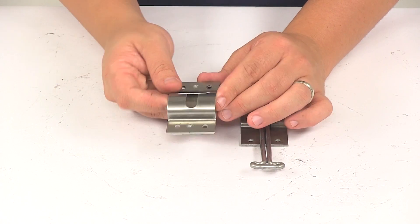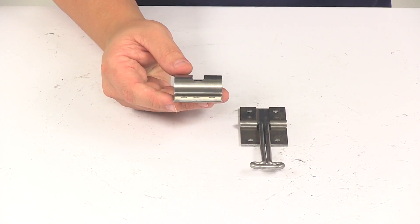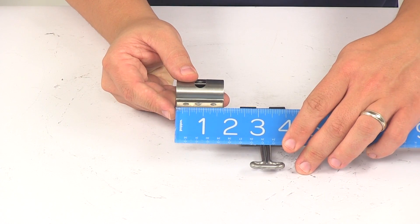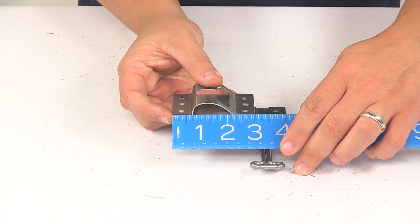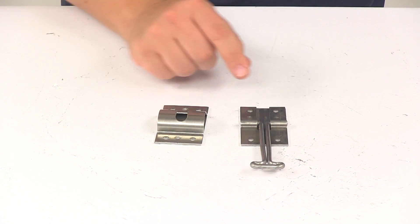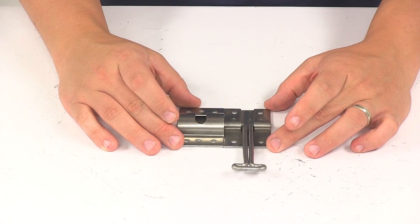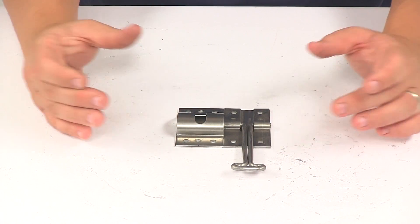This piece right here is going to give us a measurement of one and three-quarters of an inch wide with a height measurement of three inches. And then this piece is going to measure the same. You can see that backing plate is exactly the same on each piece.